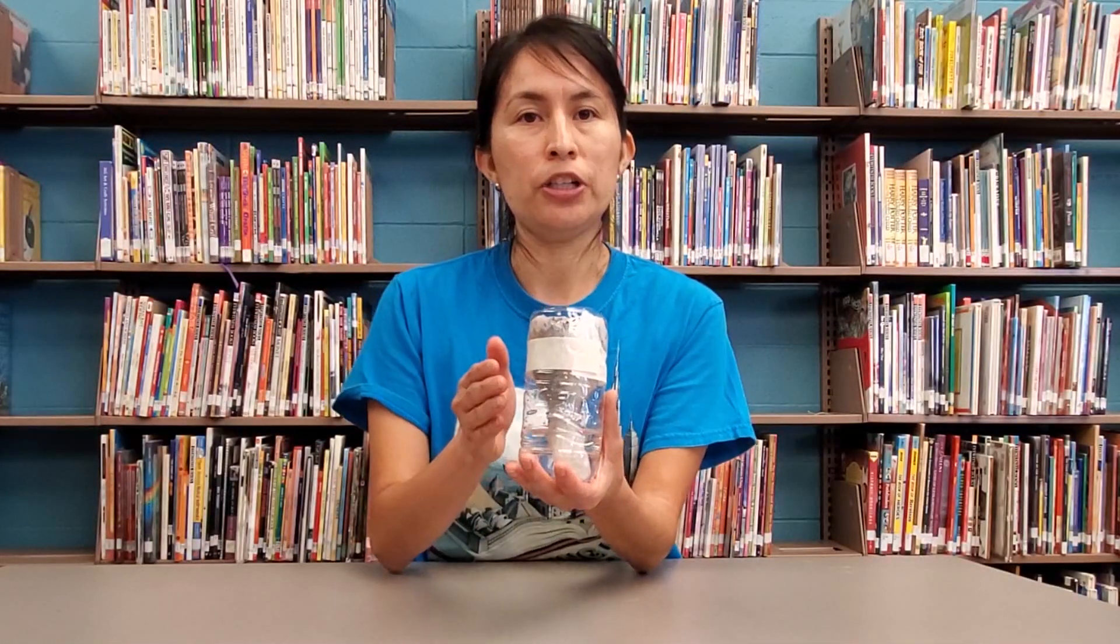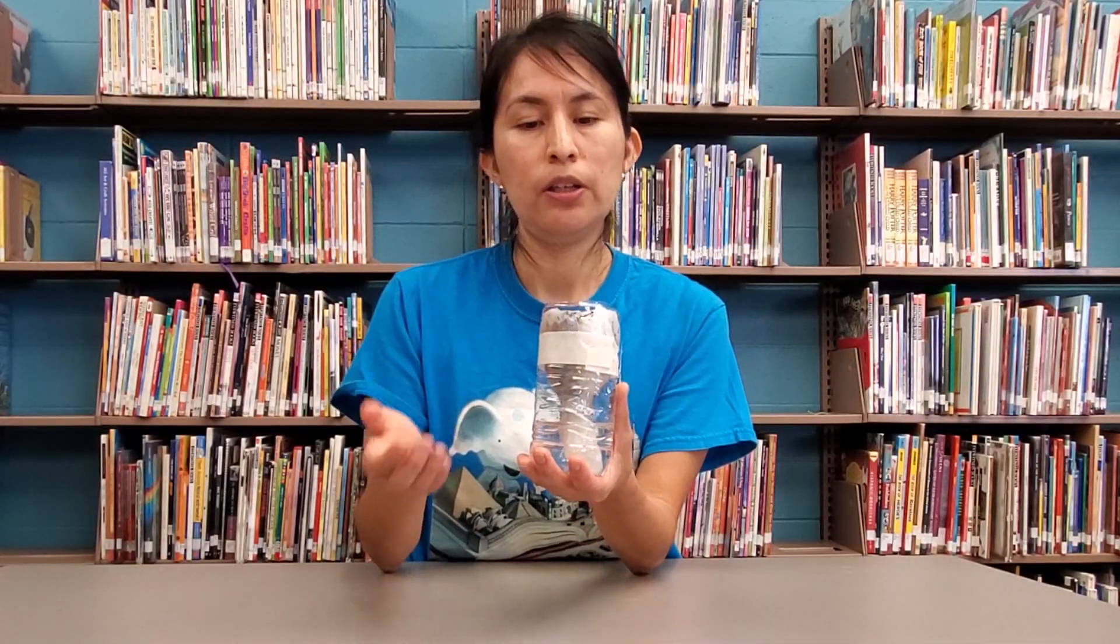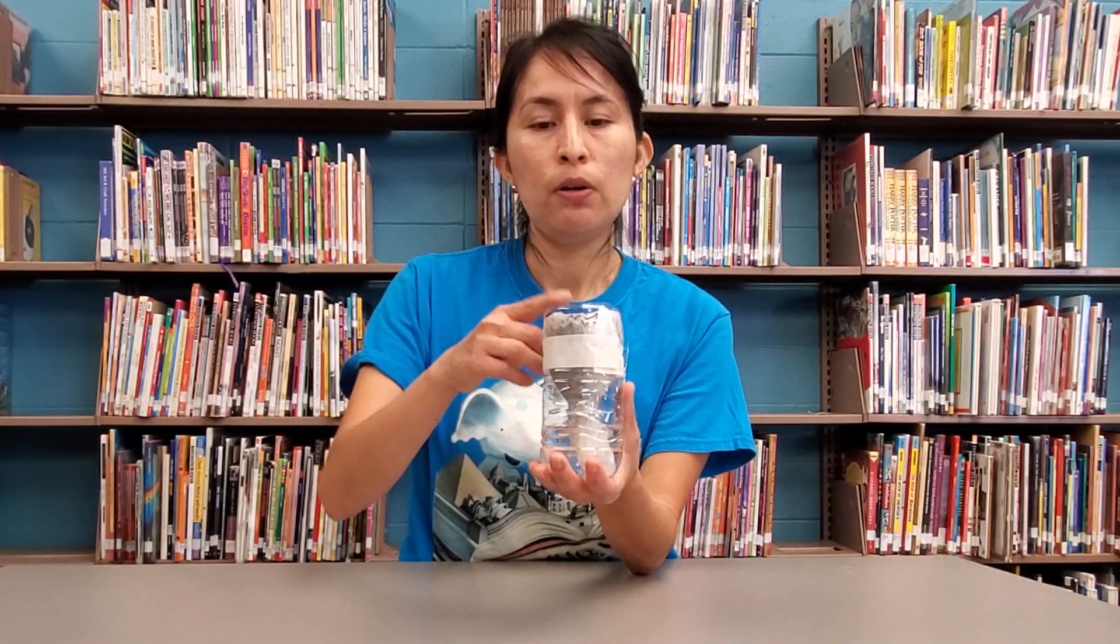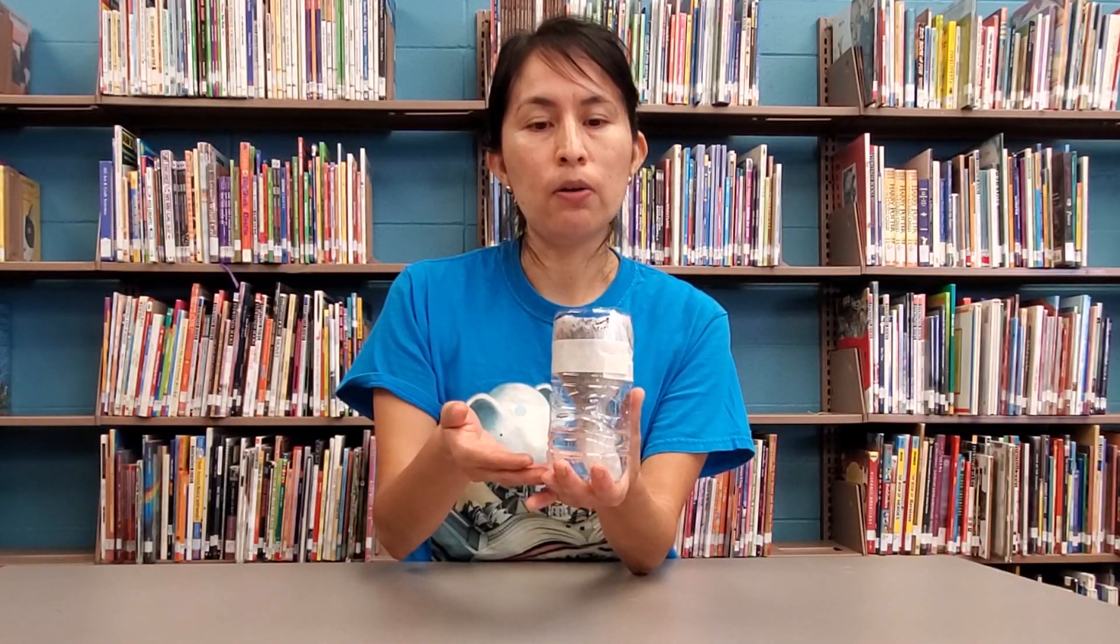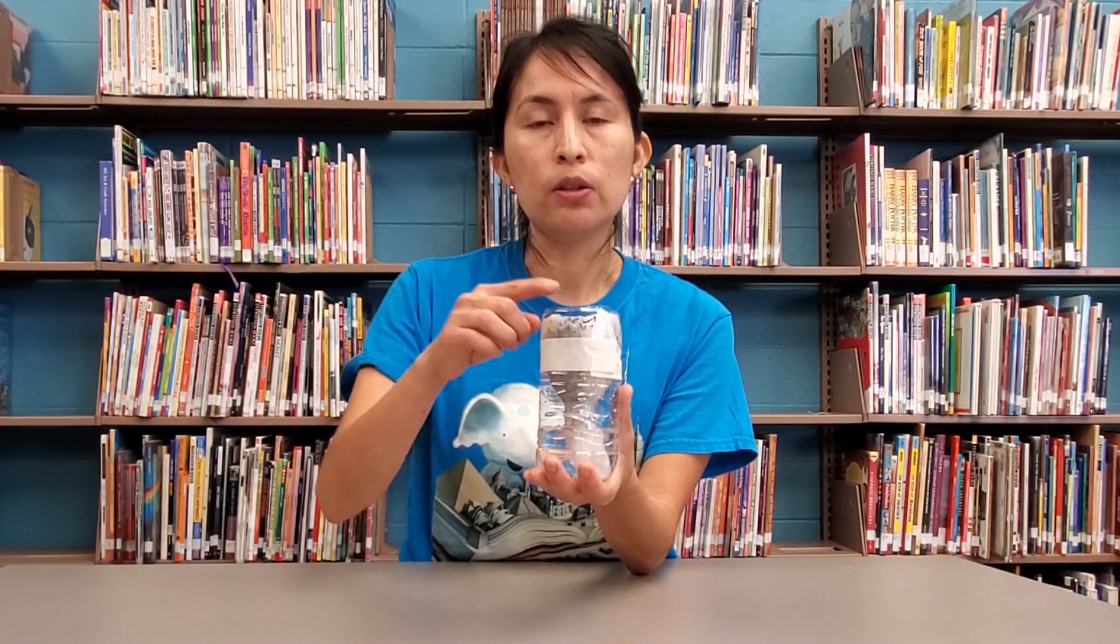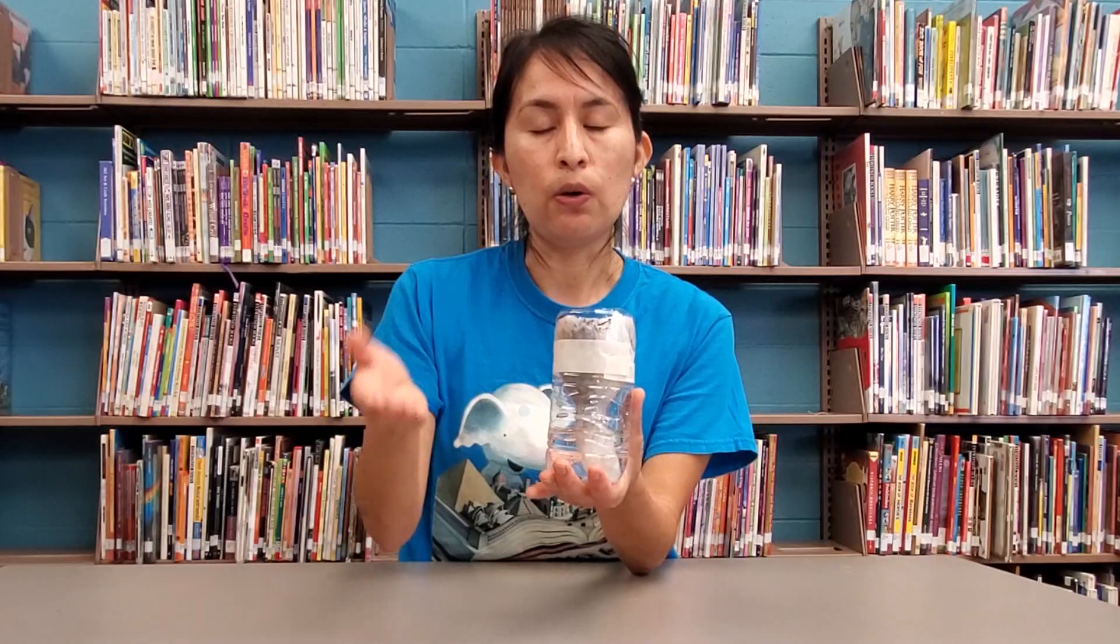So we finished our project. Let me tell you how it works. The paper wicks water from the bottom of the bottle, keeping the soil moist, meaning that you only have to water once the soil has dried or the bottom of the reservoir has finished.